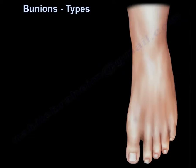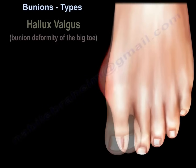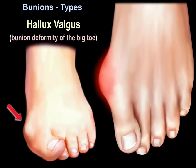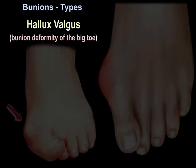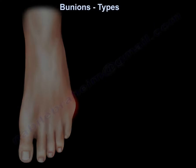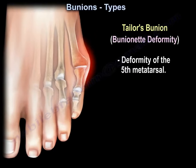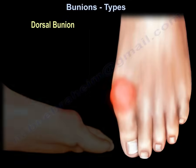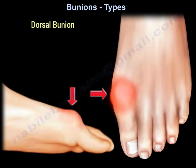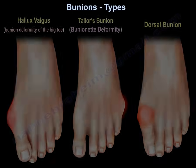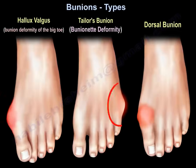Bunions types. Bunions can be hallux valgus, which is a bunion of the big toe. There's another type called Taylor's bunion, or deformity of the fifth metatarsal, also known as bunionette deformity. You may also have an entity called dorsal bunion. So bunions can be hallux valgus, Taylor's bunion, or dorsal bunion.